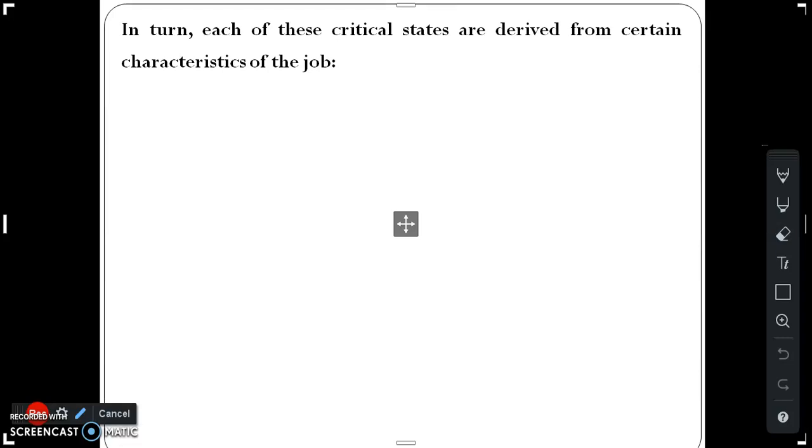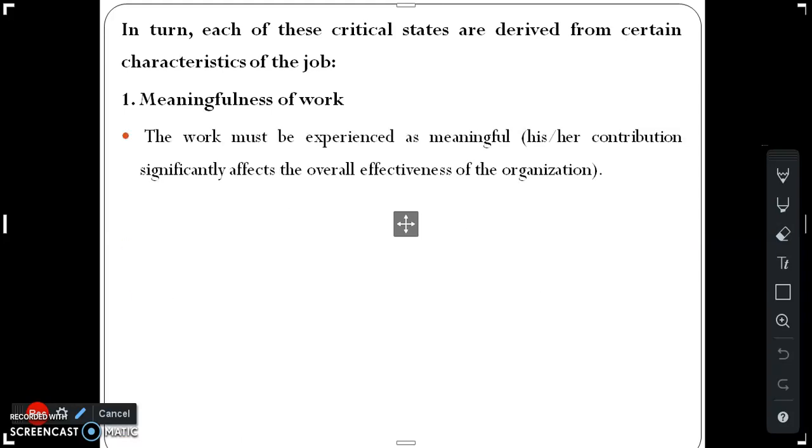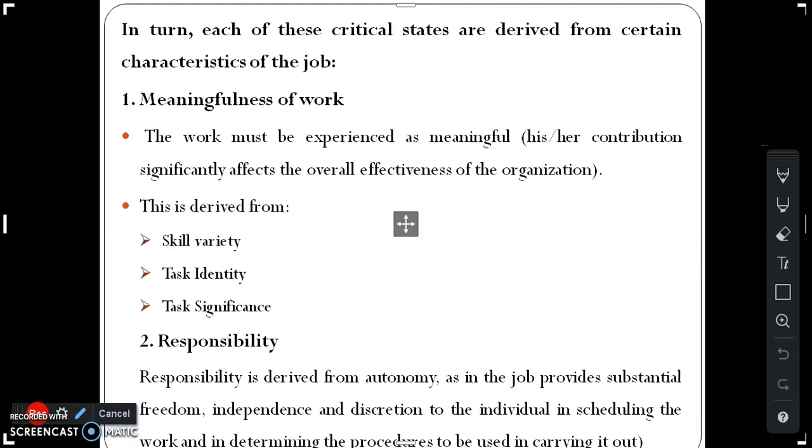In turn, each of these critical states are derived from certain characteristics of the job. Meaningfulness of work: the work must be experienced as meaningful, significantly affecting the overall effectiveness of the organization. This is derived from skill variety, task identity, and task significance.